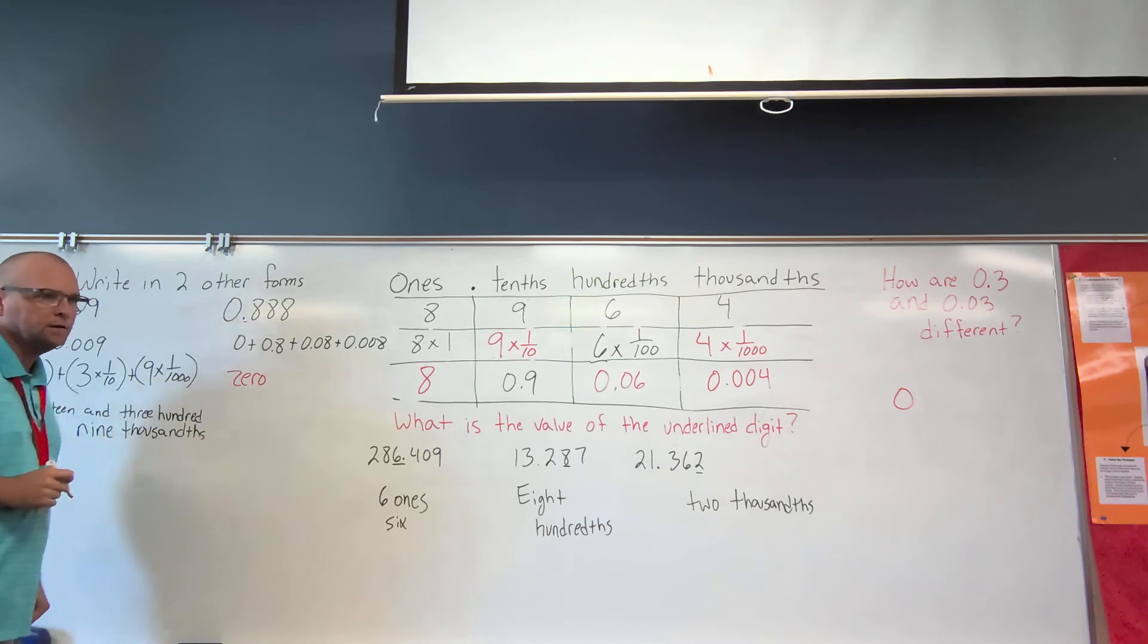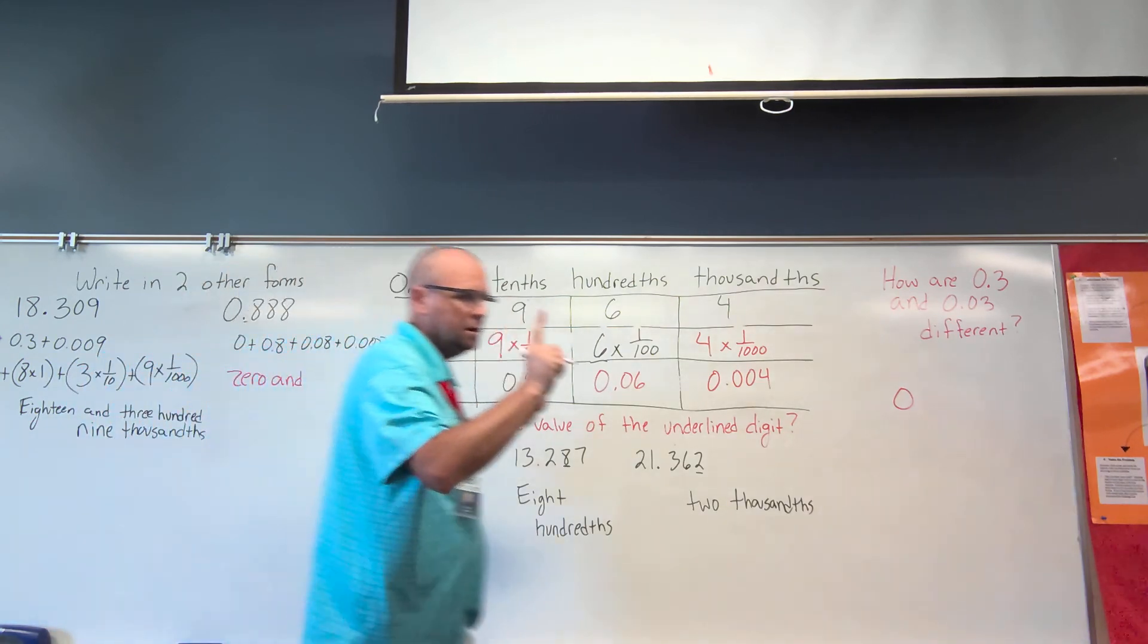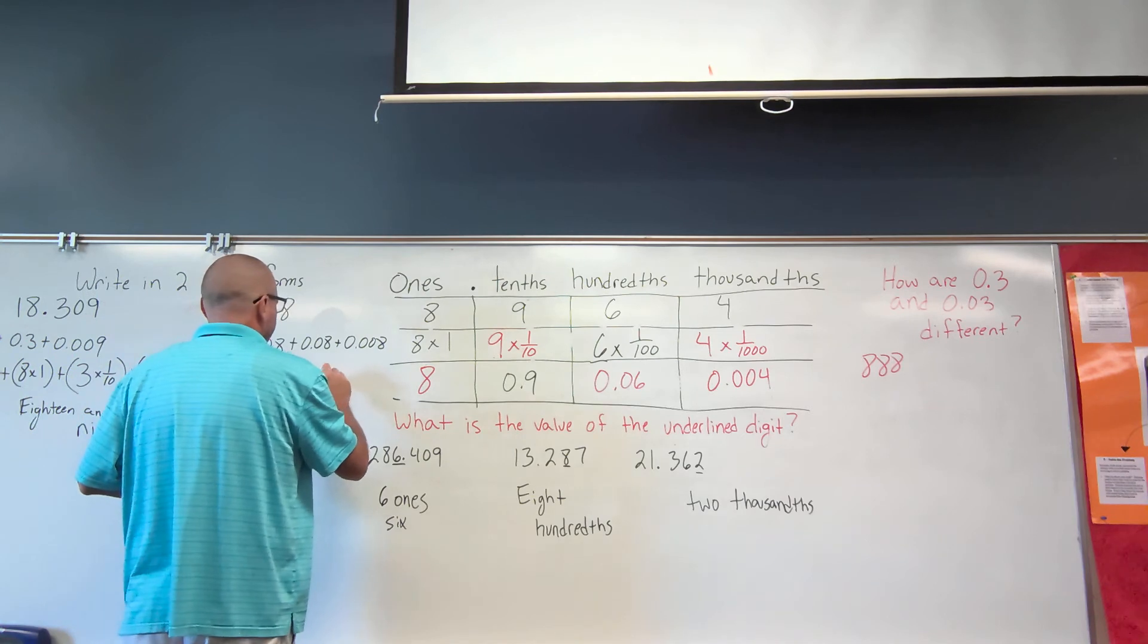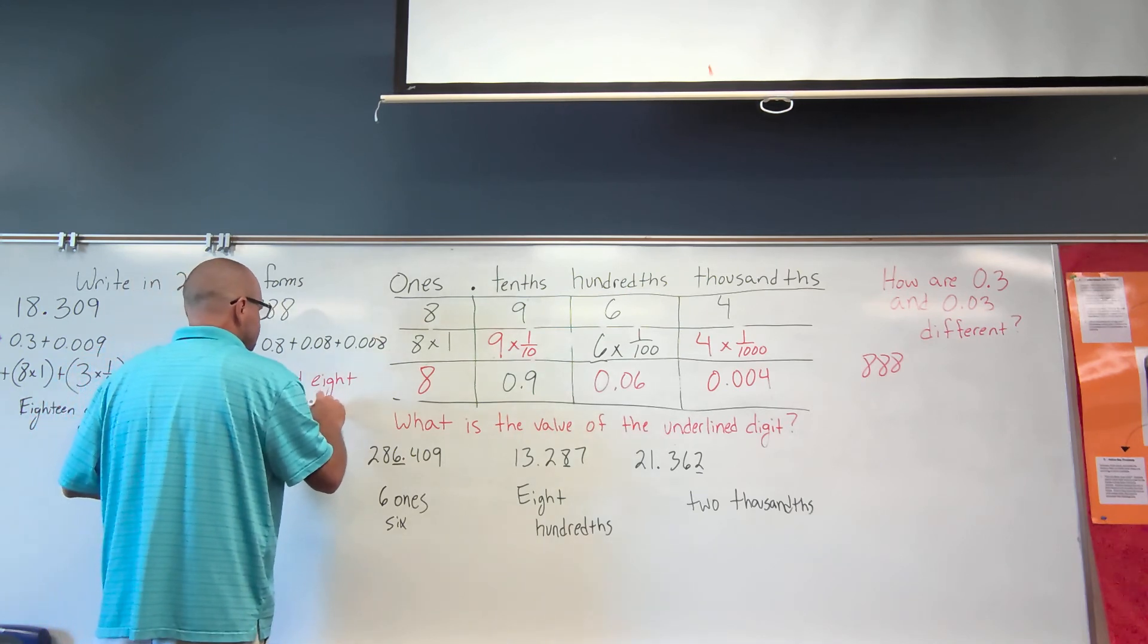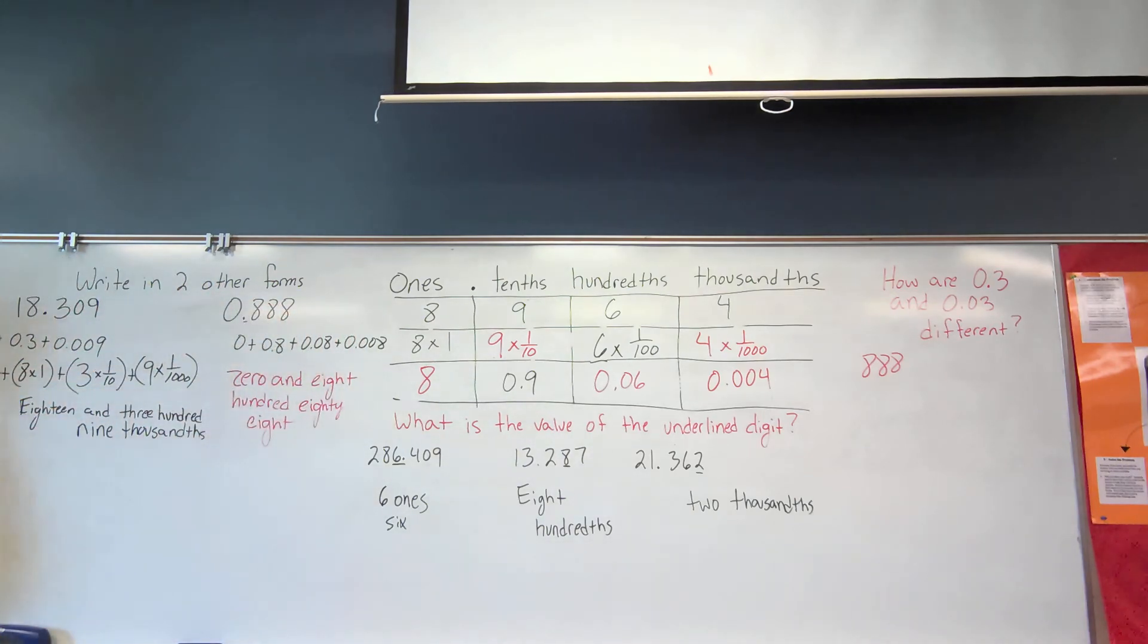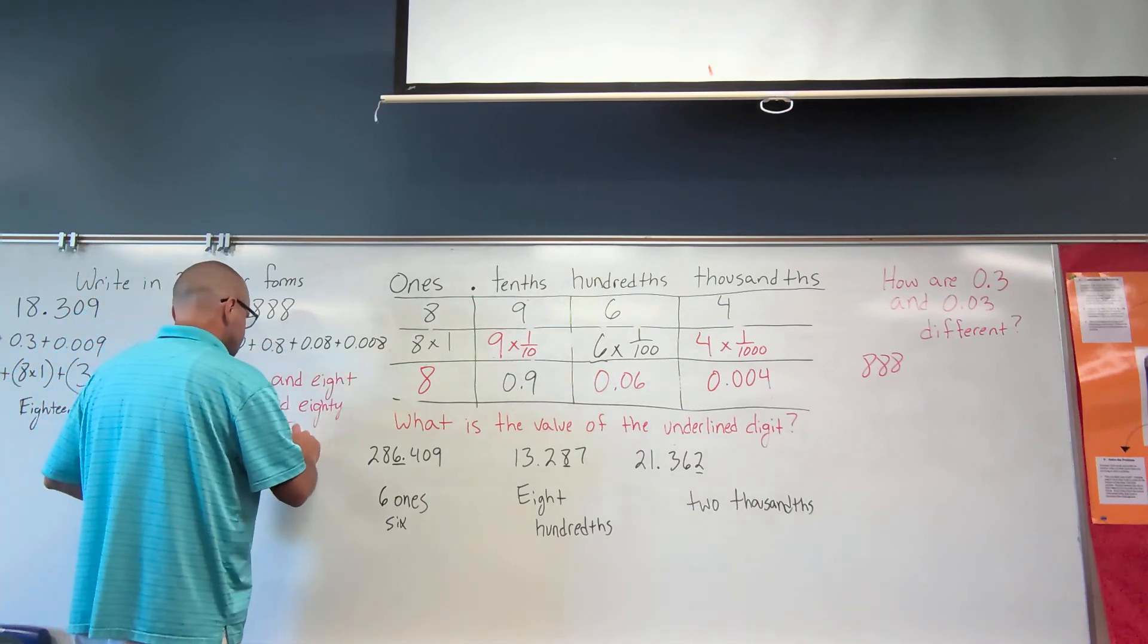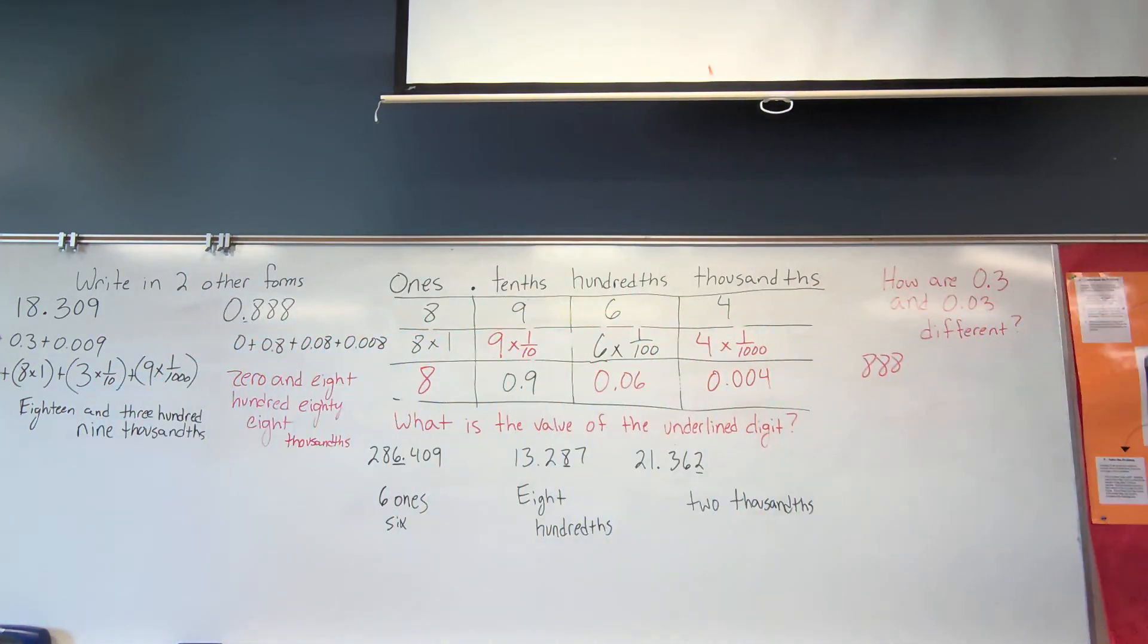Good. Now let's look at behind the decimal point. I have this number. How do you say that number? 888. And what place value is this last 8 in? Tenths, hundredths, thousandths.